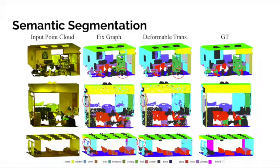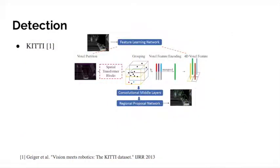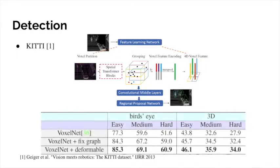The final task is 3D detection on the KITTI dataset. We use the same architecture as VoxelNet, but add additional spatial transformer blocks to it. We observe improved results on both bird's eye and 3D detection with spatial transformer.